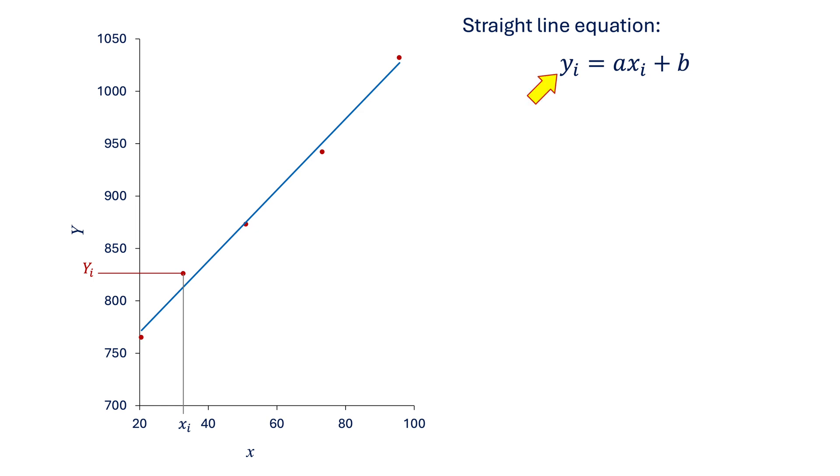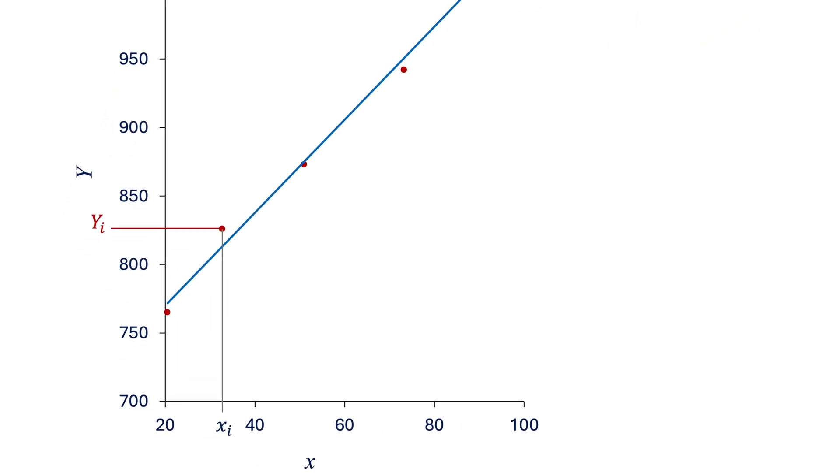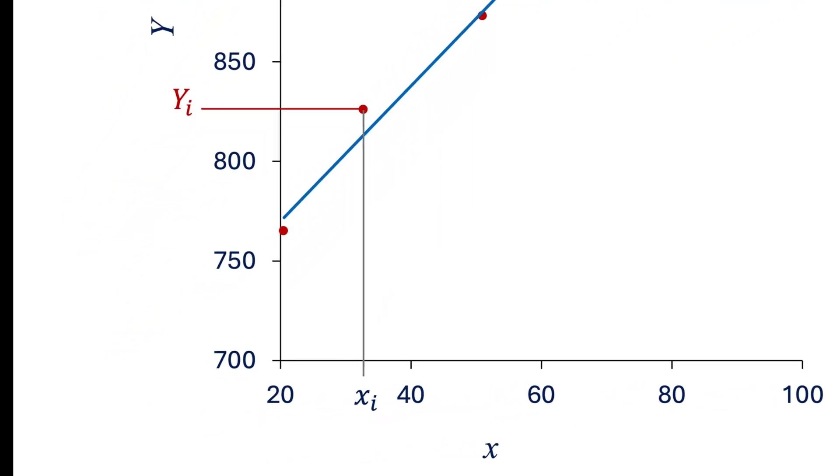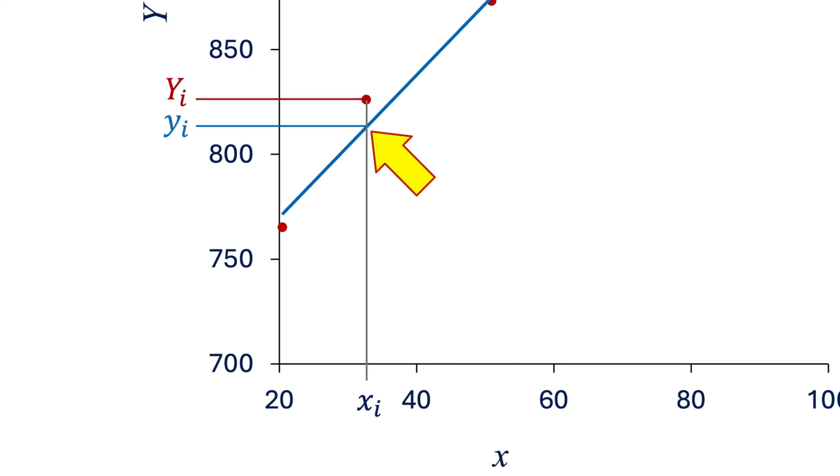yi is the value corresponding to xi and satisfied the straight line equation. And on this example graph, it is the point at the intersection with the straight line at xi. Consequently, we have two values corresponding to xi.